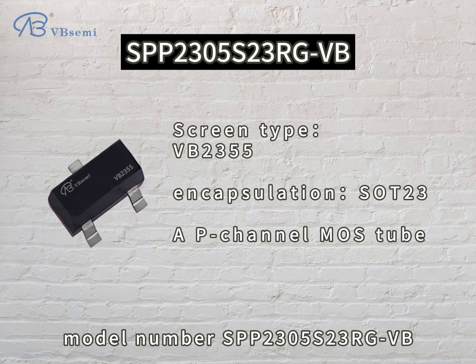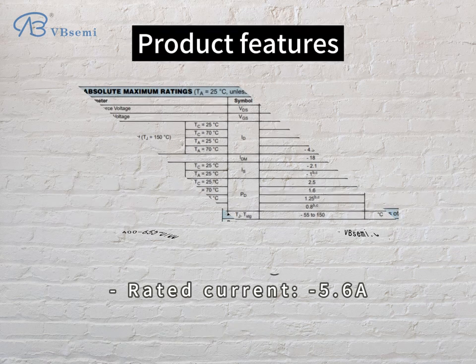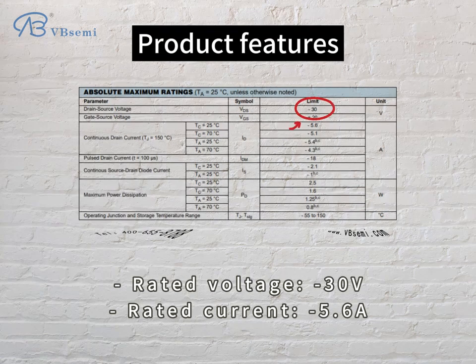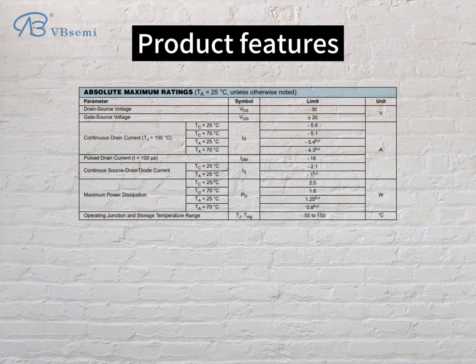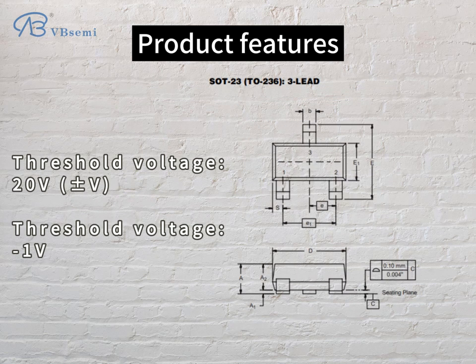Model number: SPP2305-S23-RGBB. Product features: Rated Voltage -30V, Rated Current -5.6A, Threshold Voltage -1V.